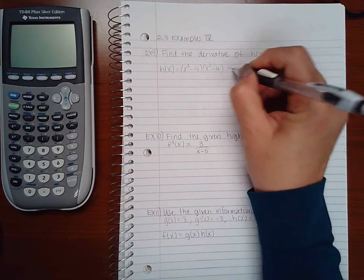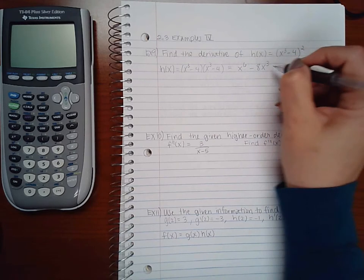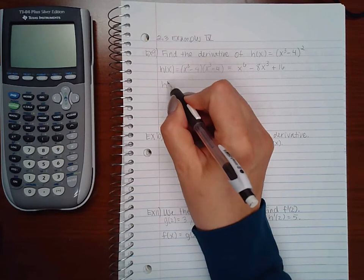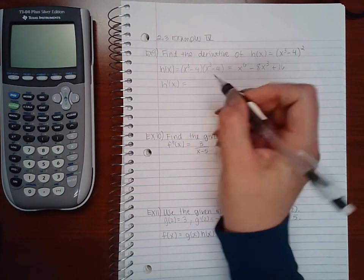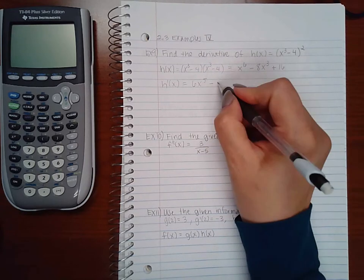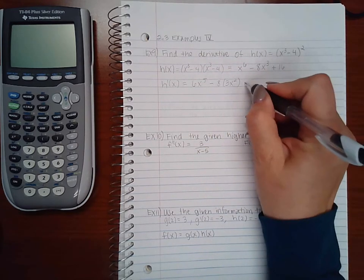So we end up getting x to the 6th power minus 8x to the 3rd power plus 16. Then now I can take the derivative of each term. So I get 6x to the 5th minus 8 times 3x squared plus 0.